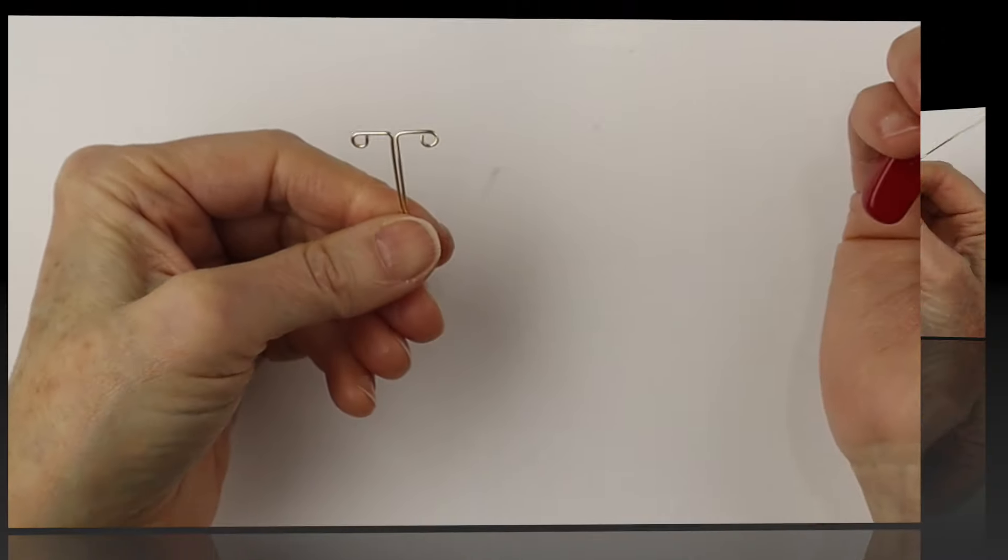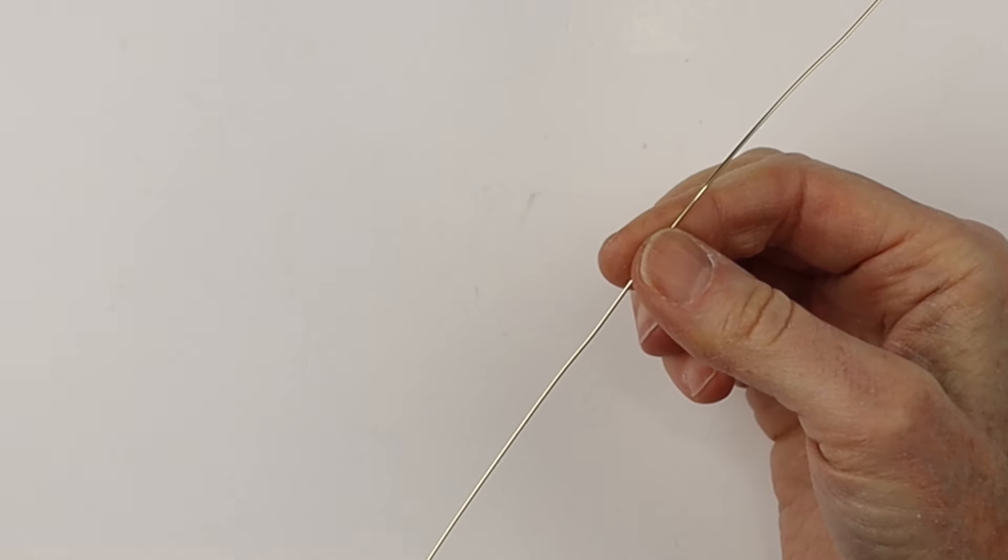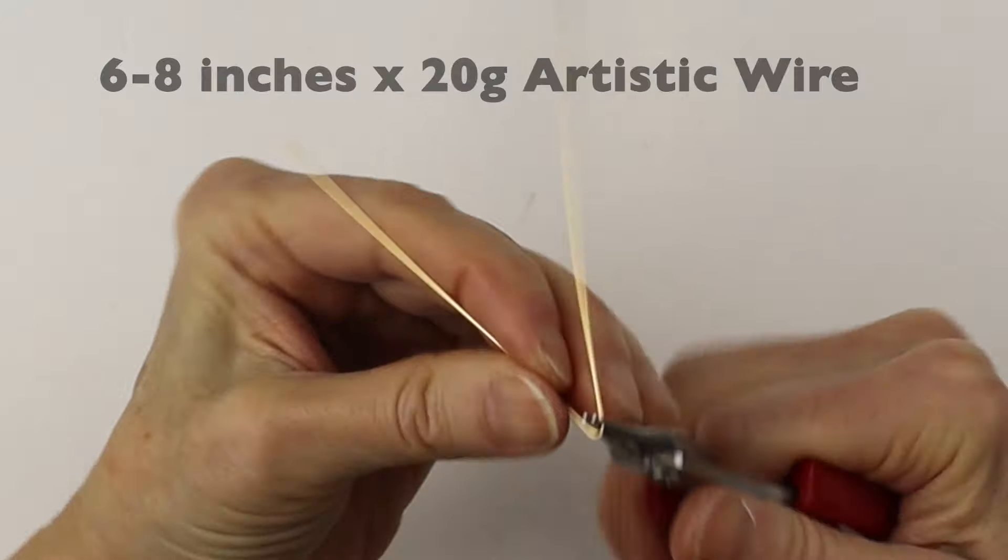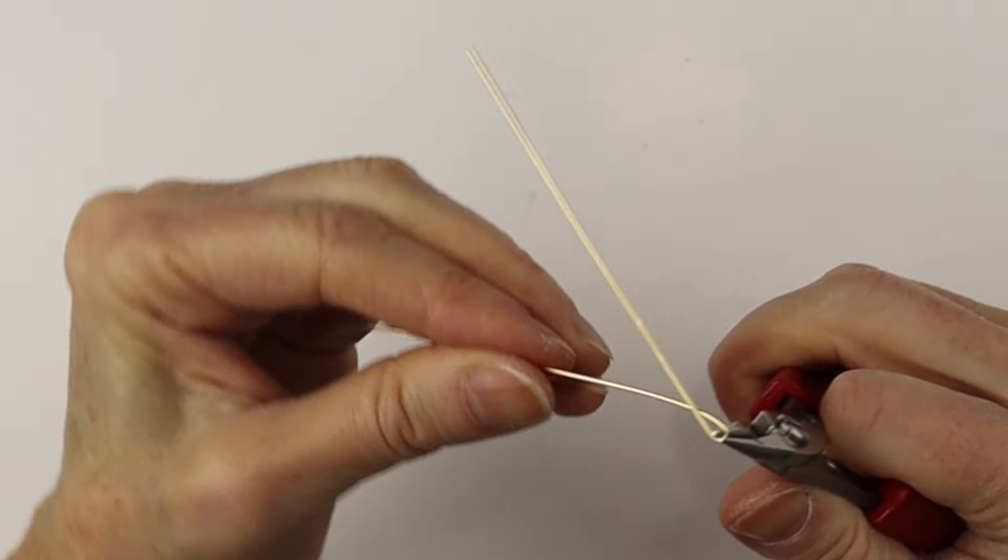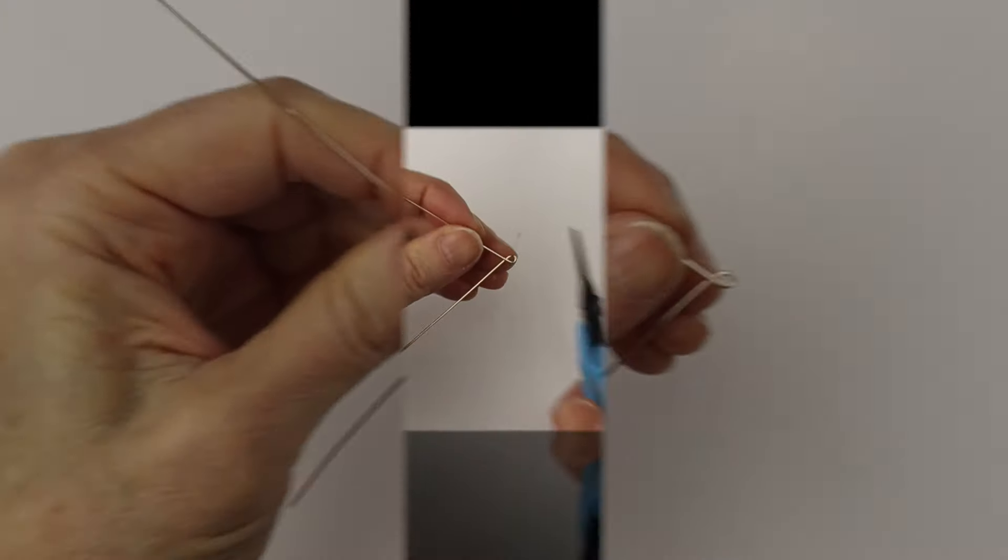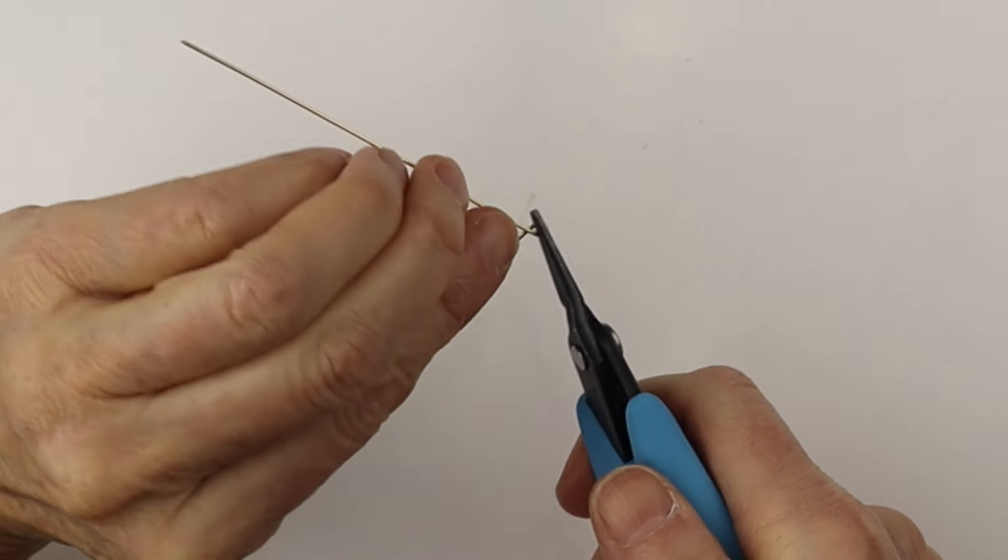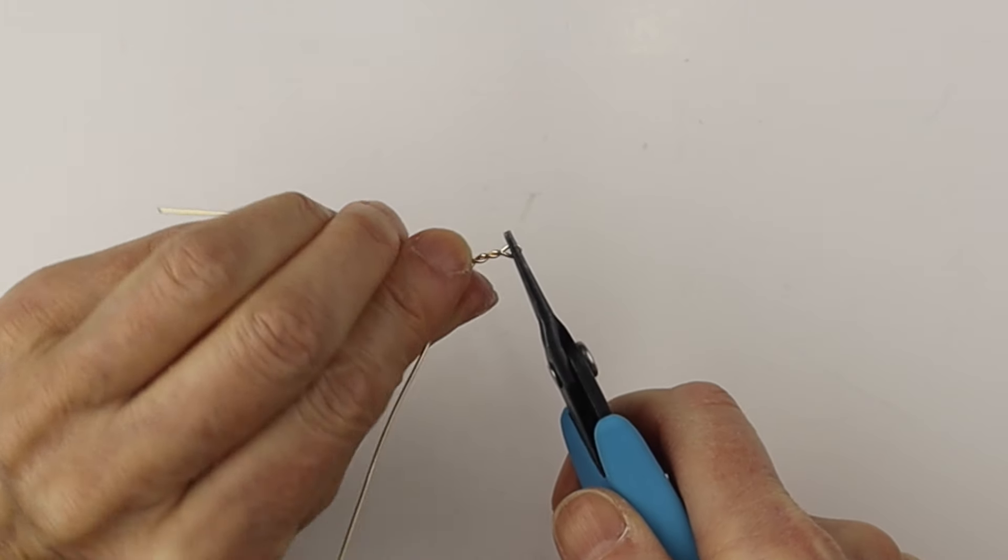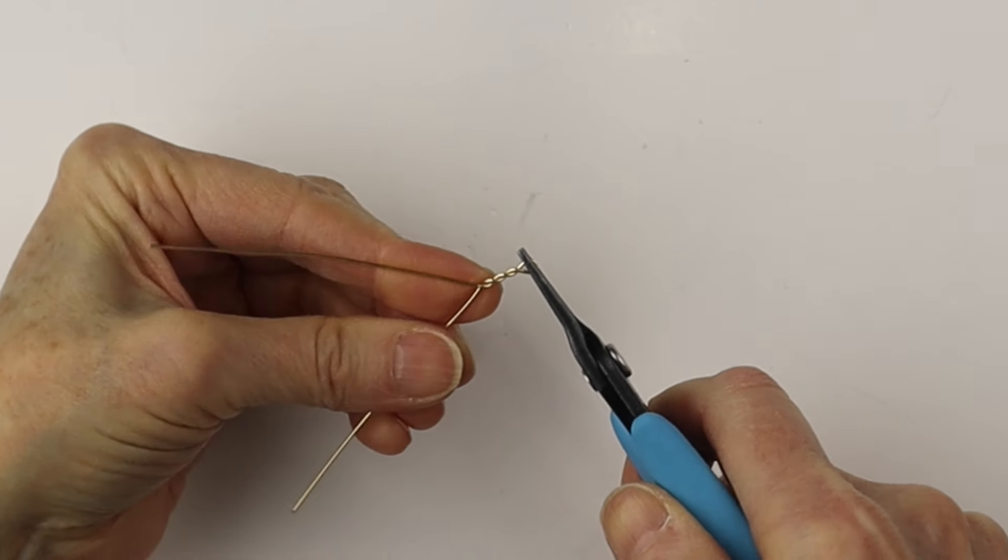So now we have our base. And from there we'll take another wire, 20 gauge, could be about six inches, six or eight inches depending on how big you want to make your sword. Hold the end and twist.